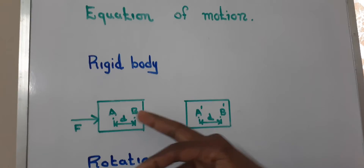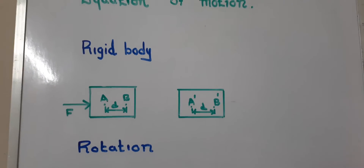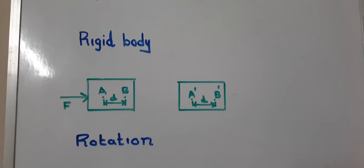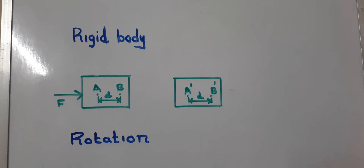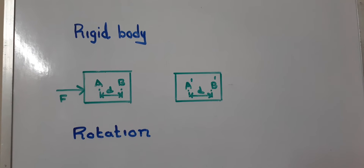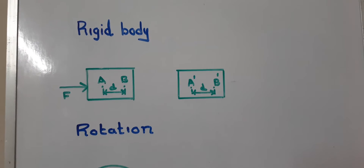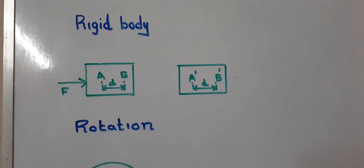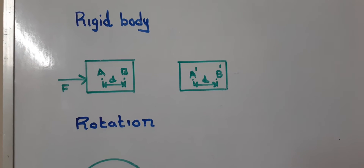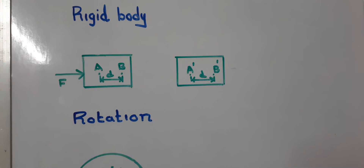A rigid body is something which will not bend and will not change its shape when you apply force to it. The technical definition is: if you pick a couple of points inside a rigid body, the distance between them does not change during the motion of the body or during the application of any external force on it.